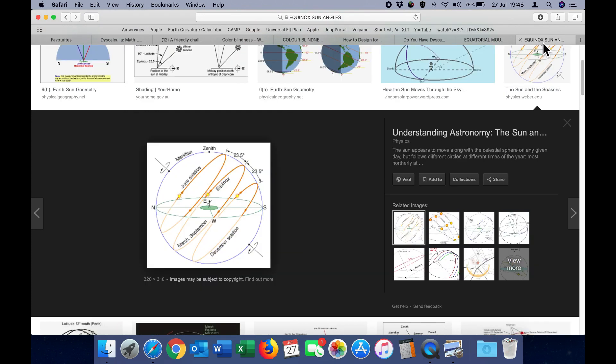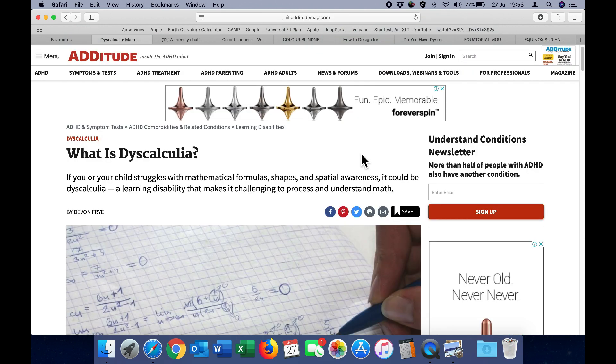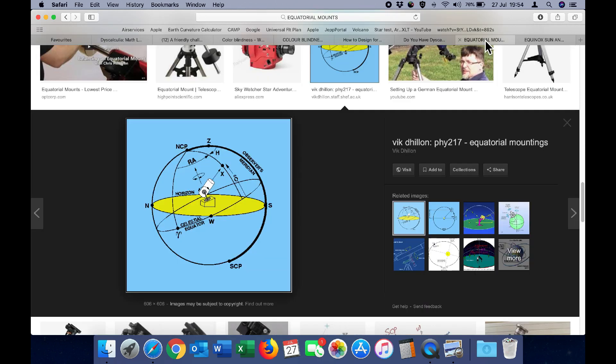And I have lost count of the number of times I have heard the phrase geometry blind used to describe flat earthers, and I'm guilty of doing that myself. But geometry blindness is a definite explanation as to why the average flat earther cannot understand why the equatorial mount proves the earth is not flat.